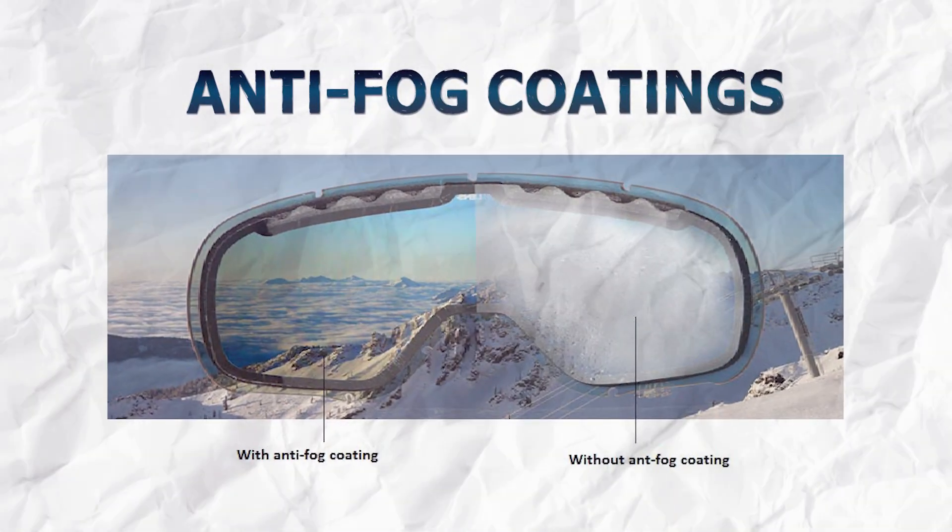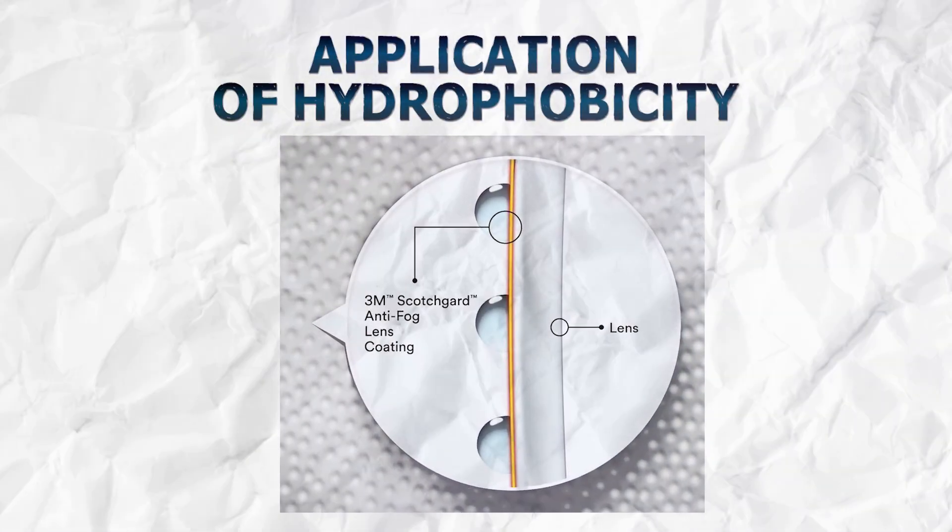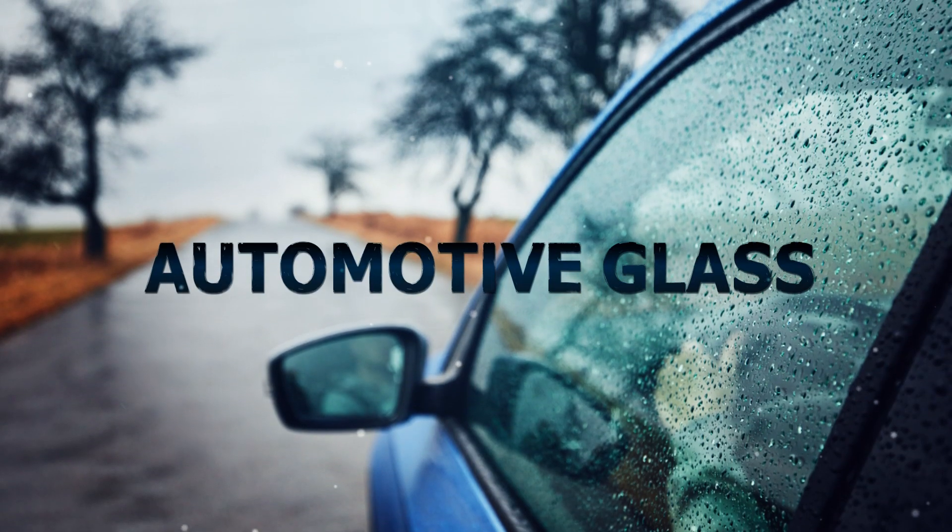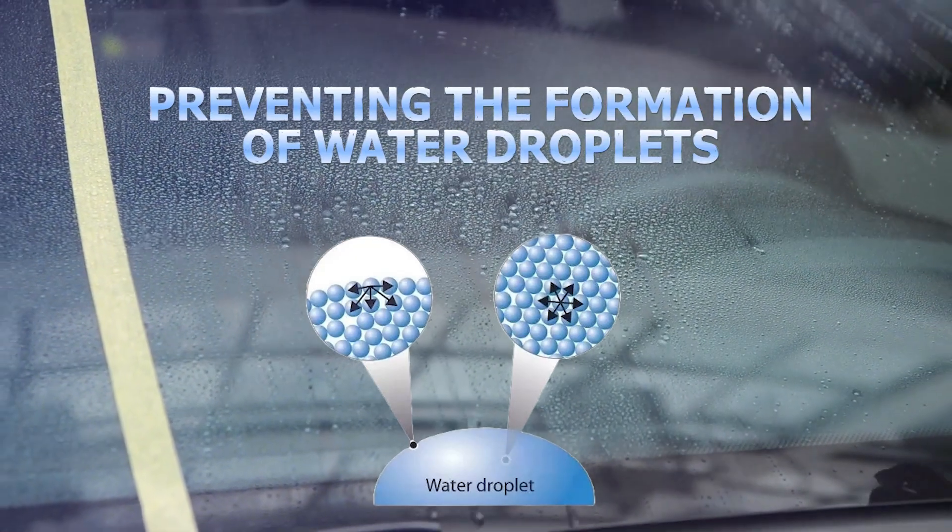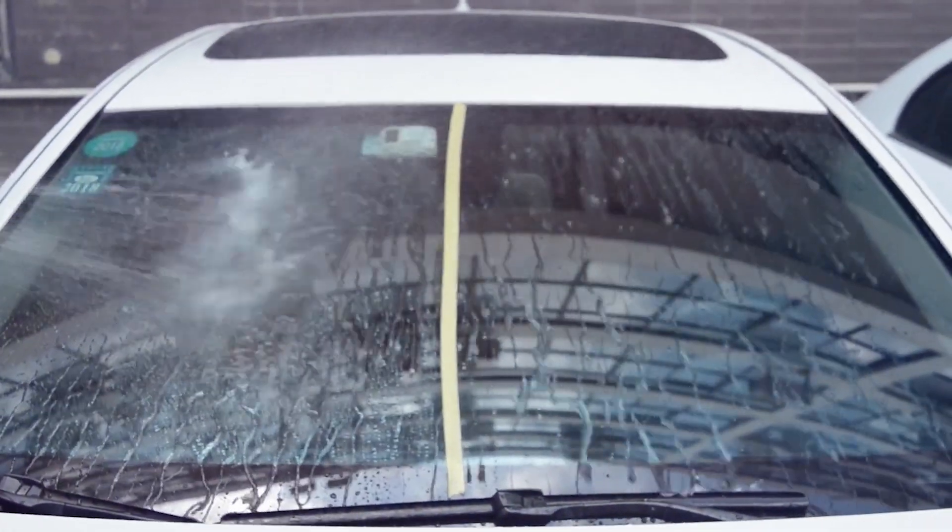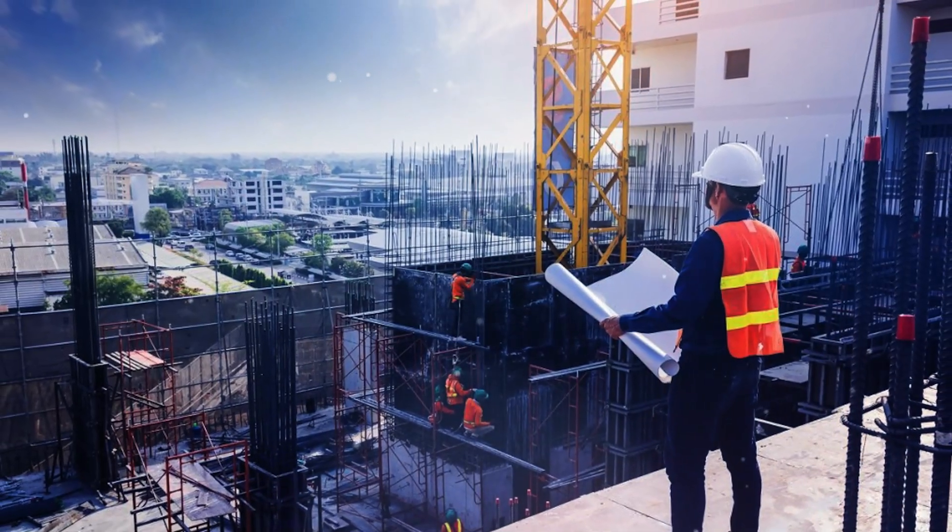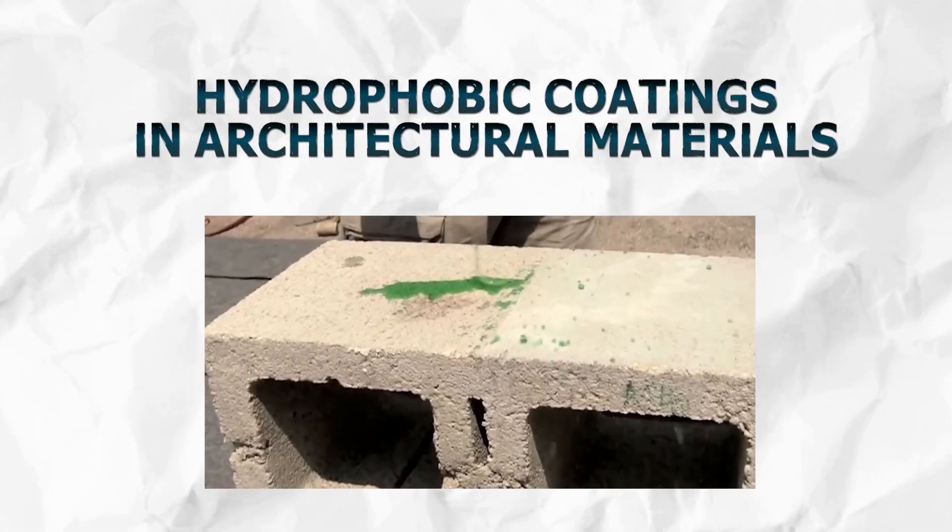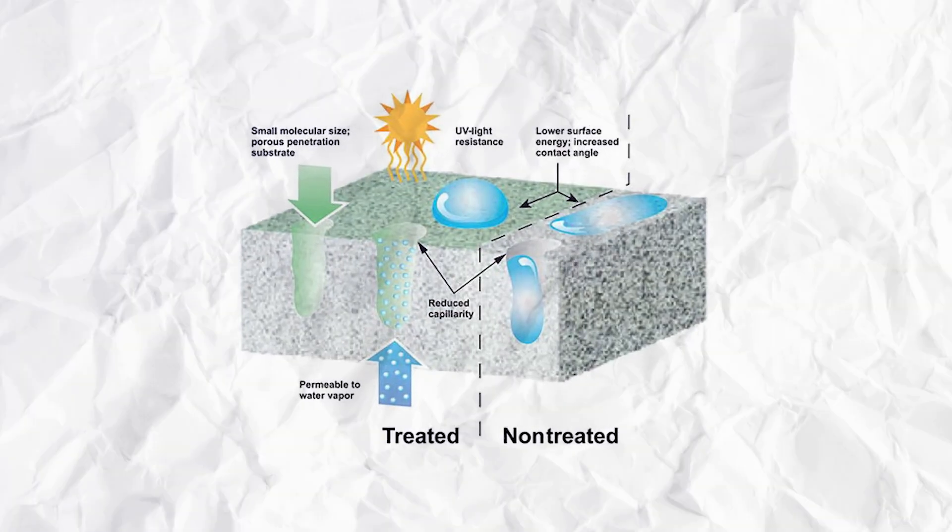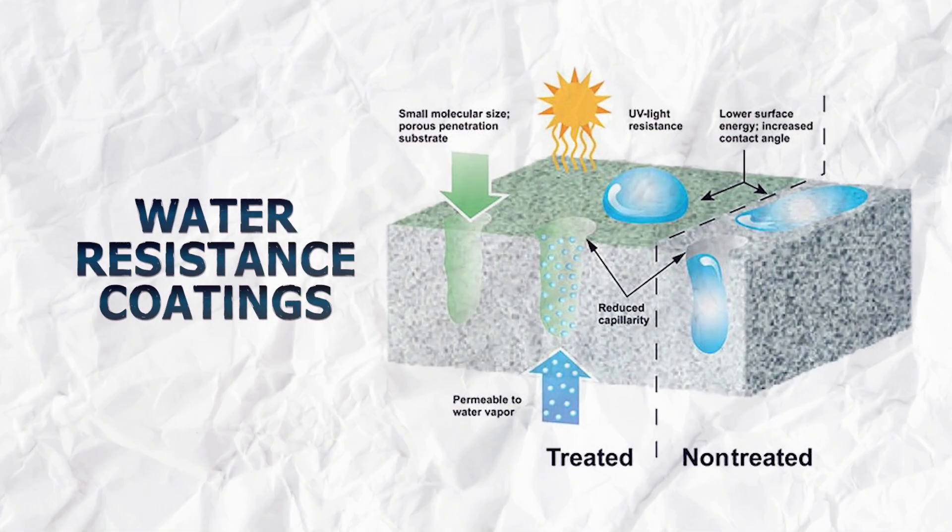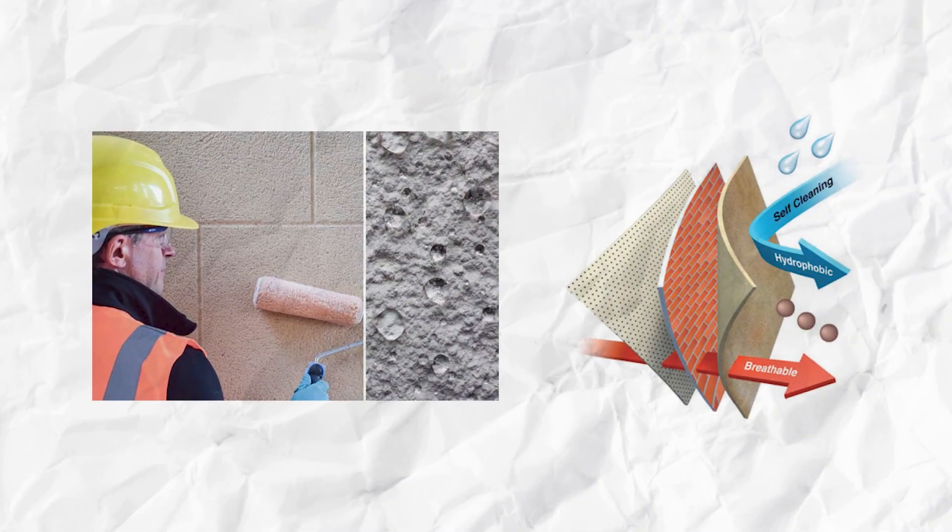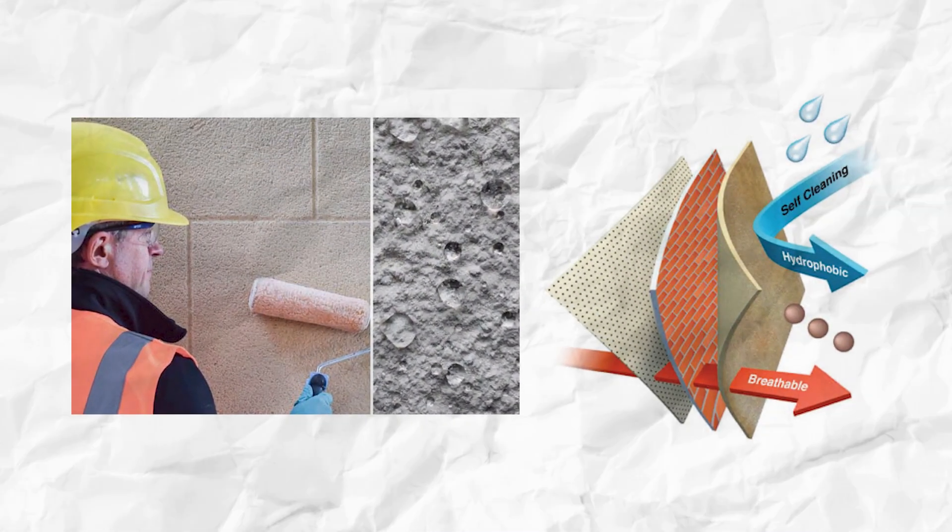Anti-fog coatings, another application of hydrophobicity, find utility in eyewear, camera lenses, and automotive glass. By preventing the formation of water droplets and maintaining optical clarity, these coatings improve visibility and safety. In the construction industry, hydrophobic coatings are employed in architectural materials such as glass and concrete. These coatings not only provide water resistance but also contribute to the longevity and durability of structures by preventing water ingress and the subsequent damage associated with it.